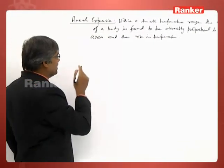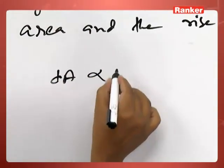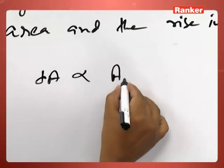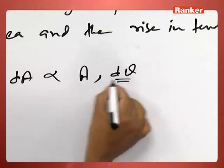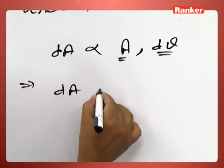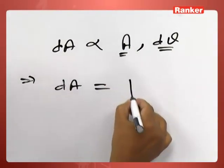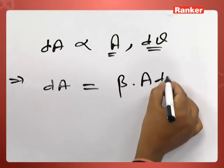If I denote change in area as dA, then dA is proportional to initial area A as well as delta theta. That implies dA is equal to beta A d theta, where beta is the proportionality constant.